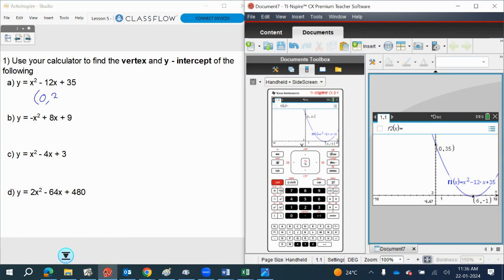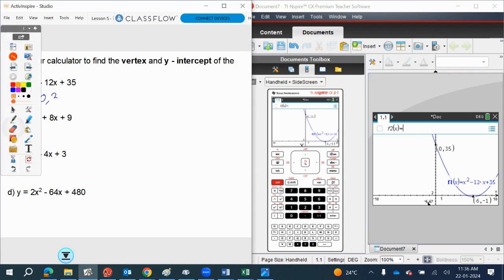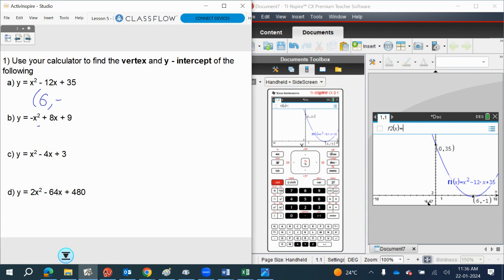Alright, that's 6. So the vertex is at 6, minus 1. This is the vertex. The y-intercept is 35. So there's the first one done for you. Have a go at the next three for yourself. Have you paused the video?